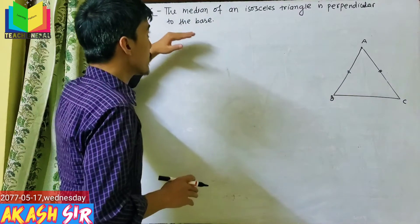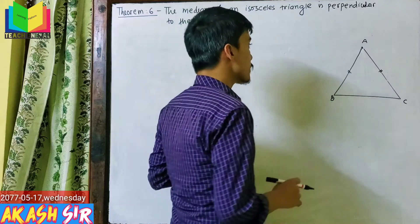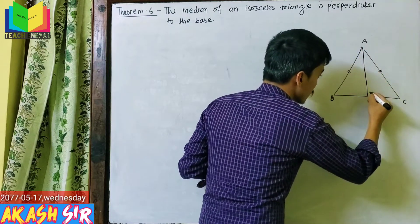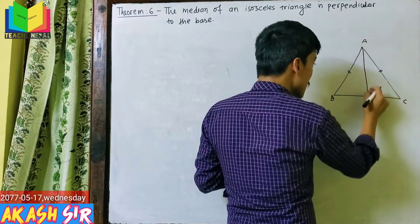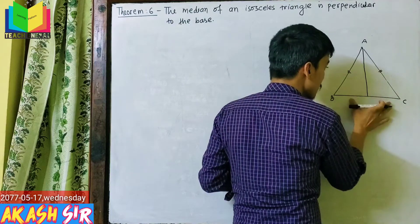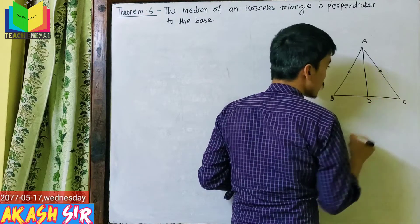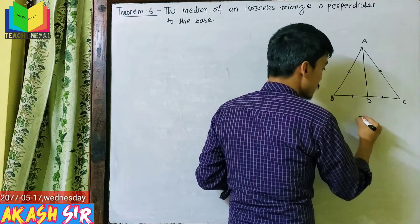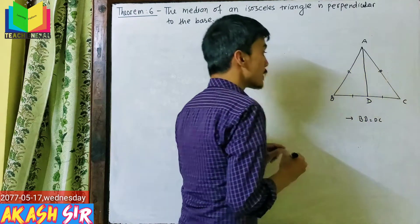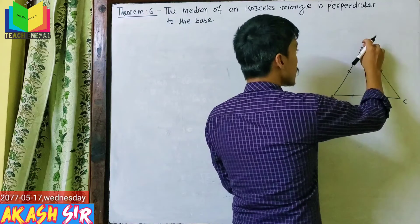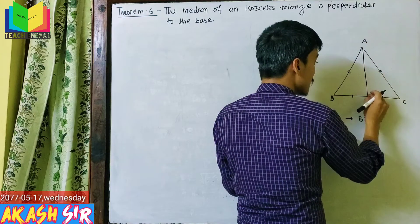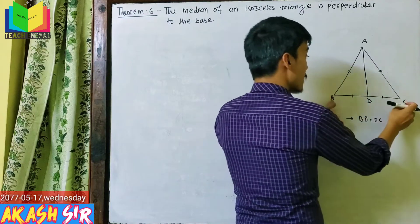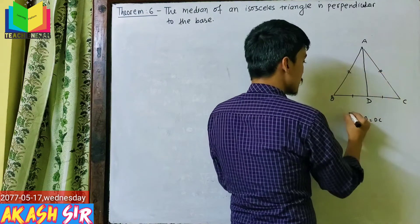What is the question? The median of an isosceles triangle is perpendicular to the base. If BC is the base, what is the median line? If we take a point on the base and draw a line from vertex A, we divide BC into two equal parts. This point is D. So BD is equal to DC — BD and DC are each half of BC.